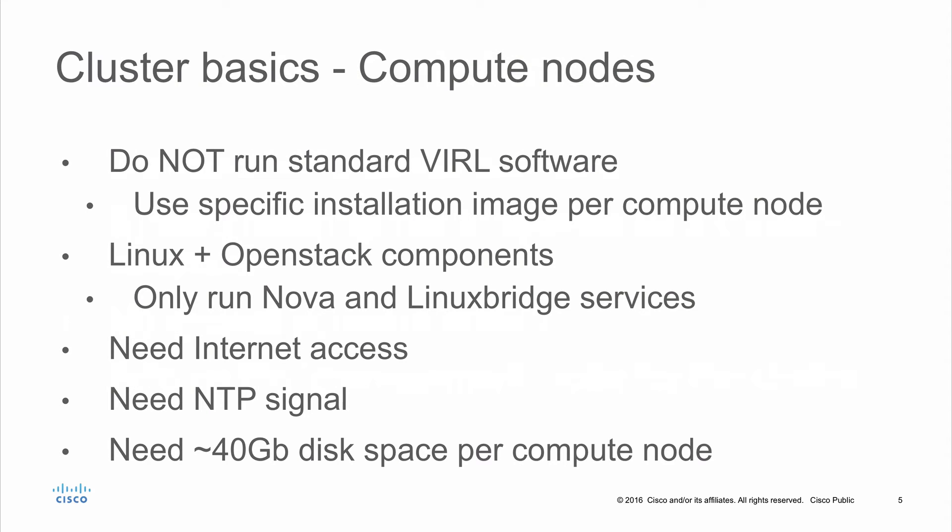Now let's take a look at the compute nodes. They are not using standard viral software — they have a much simpler, cut-down set of software installed. We provide specific installation images for each compute node: compute 1, 2, 3, 4 each have an individual installation image. So if you've got a cluster of compute 1 and compute 2, make sure you're installing the correct image for each one. It would not make sense to install the compute 2 image on both.